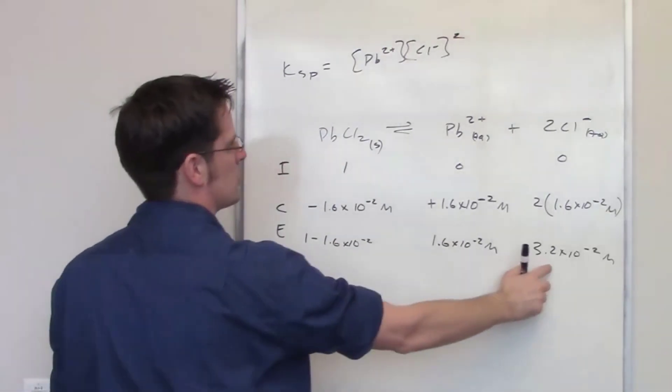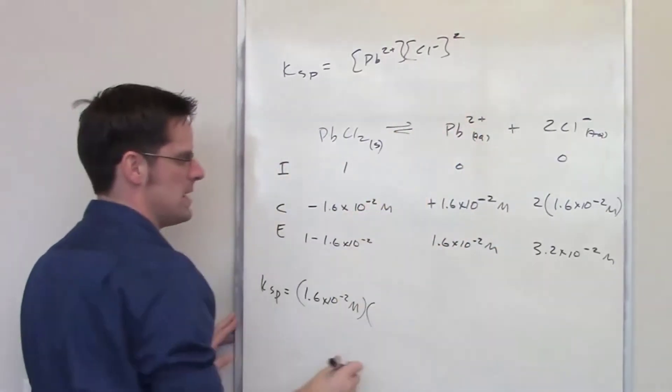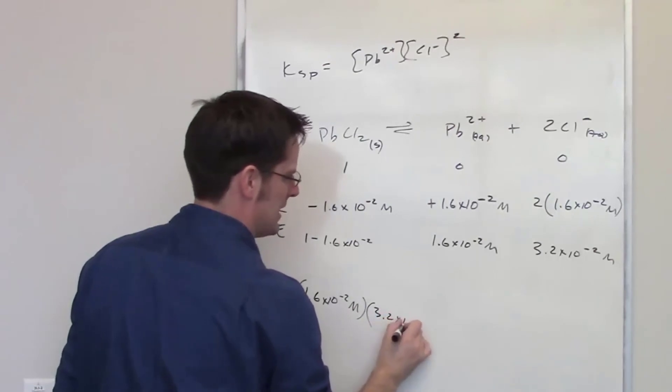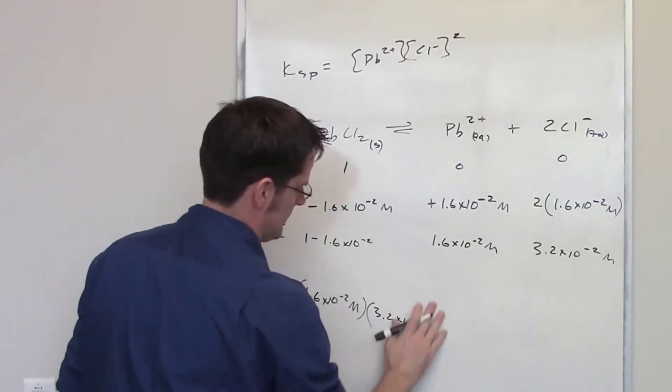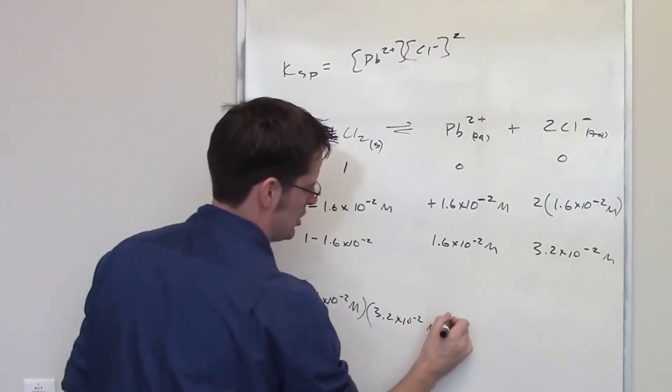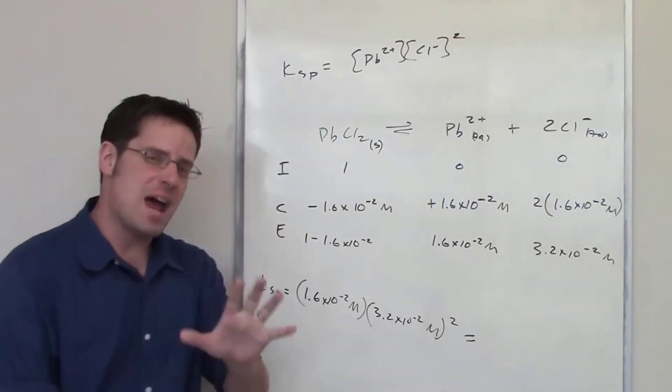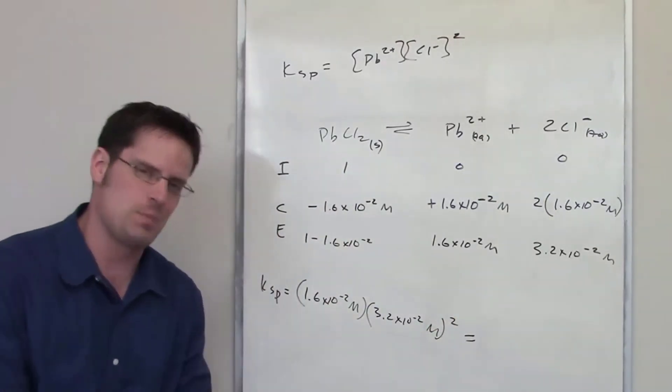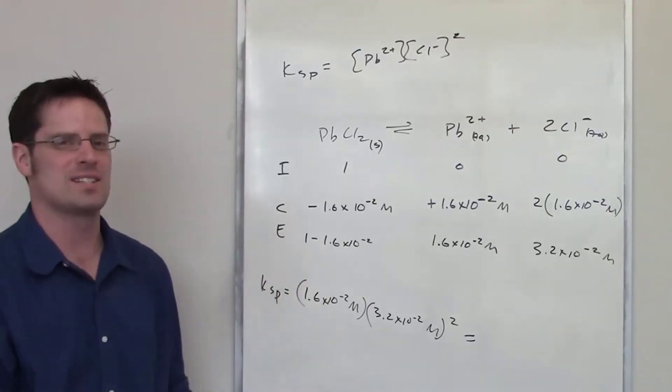Multiplied by the concentration at equilibrium of chloride minus, which is 3.2 times 10 to the negative 2, and I guess I can keep the molar in there, and now I'm going to square it. So you solve for that. That will be your final answer for Ksp for this lead chloride solution.